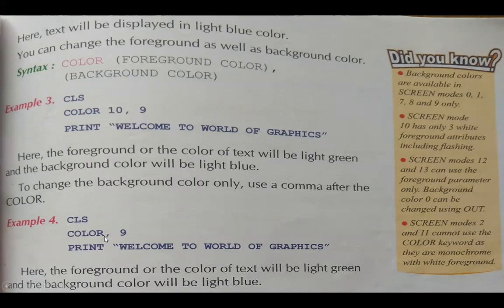If we want to apply both background color and foreground color, we use two color numbers separated by a comma — the first for the foreground (front) color and the second for the background (back) color. For example, COLOR 10, 9 means the foreground color is 10 (light green) and the background color is 9 (light blue). If we leave the background color unchanged and only specify the foreground color — such as COLOR 4 — the text appears in color 4 (red) while the previous background color remains.